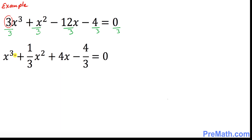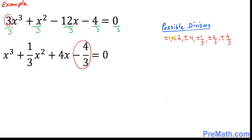Now let's shift our focus to this side. Look at the number at the very end: negative 4 over 3. We are looking for possible divisors — that is, the factors of this number. Our possible divisors turn out to be these numbers. One more thing: the highest degree of this polynomial is 3, which means we must have at most three solutions.